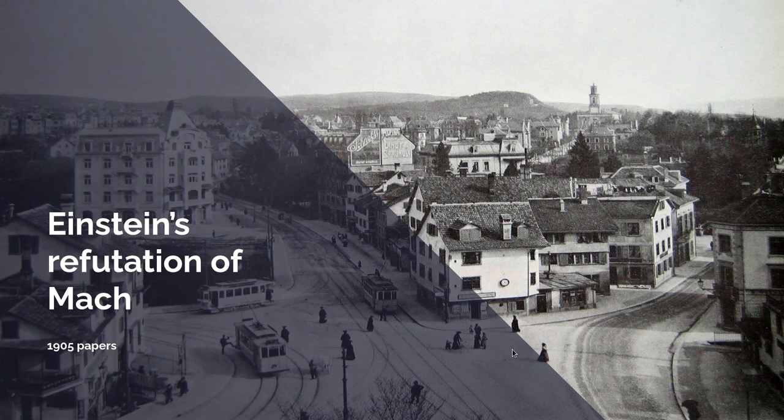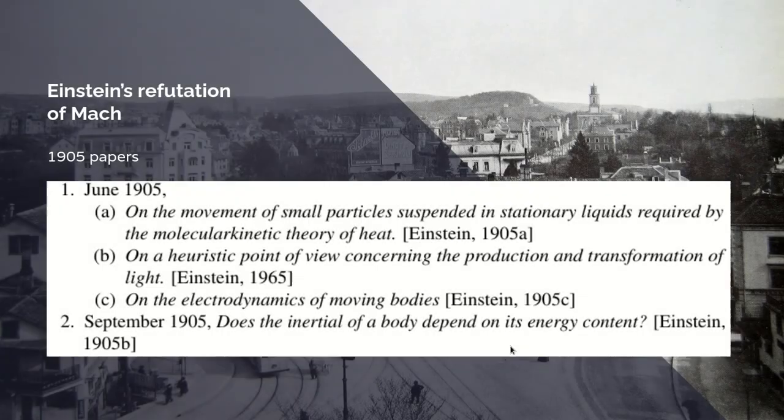Einstein was living in Zurich here, and in 1905, when he was working as a humble patent clerk, he produced four papers, four groundbreaking papers, in the successive issues of a German physics journal. In the June issue, and I'm giving the papers in the order in which they occur in the pages of the journal, the first one is called, translated obviously into English, on the movement of small particles suspended in stationary liquids required by the molecular kinetic theory of heat. Second paper, on a heuristic point of view concerning the production and transformation of light. Third paper, on the electrodynamics of moving bodies. Final paper, in September, does the inertia of a body depend on its energy content?